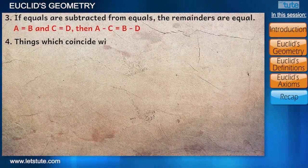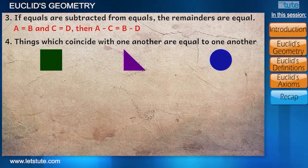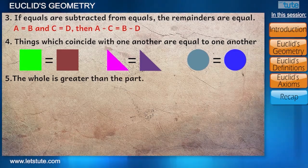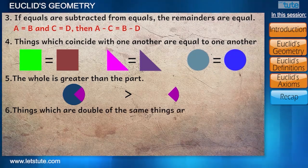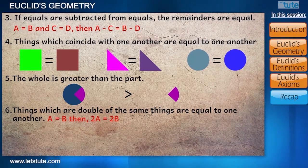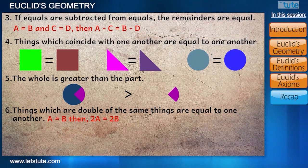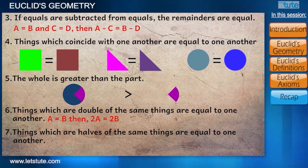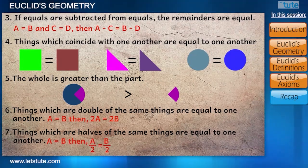Fourth axiom: things which coincide with one another are equal to one another. Fifth: the whole is greater than the part. Sixth: things which are double of the same things are equal to one another — meaning if a equals b, then 2a equals 2b. Seventh: things which are half of the same things are equal to one another — that is, if a equals b, then a/2 equals b/2.